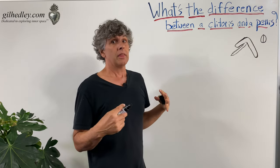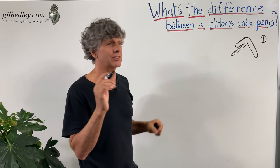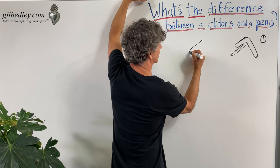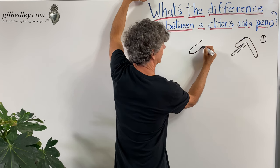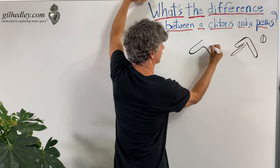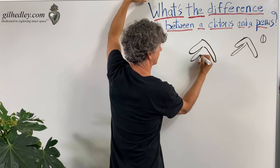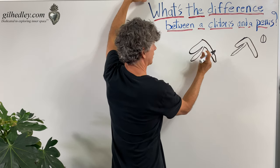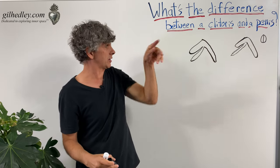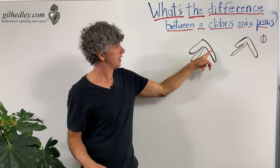The penis has the exact same structures. It might be a little more elongated, with the crura on each side similarly. So we have the same sort of structure: glans, shaft, and crura.